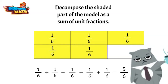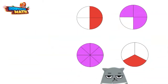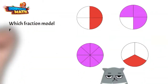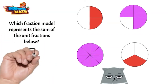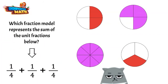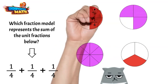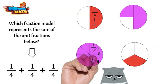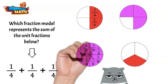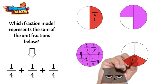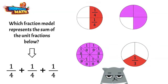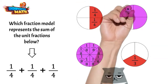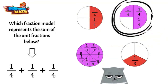This time we are putting fractions together — composing. Which fraction model represents the sum of the unit fractions below? The pieces in the first model are each one-fourth, so the sum would be one-fourth plus one-fourth. The second model is made up of eighths — it can't be that one. And this one only has one piece shaded, which is one-third — it can't be that one either.